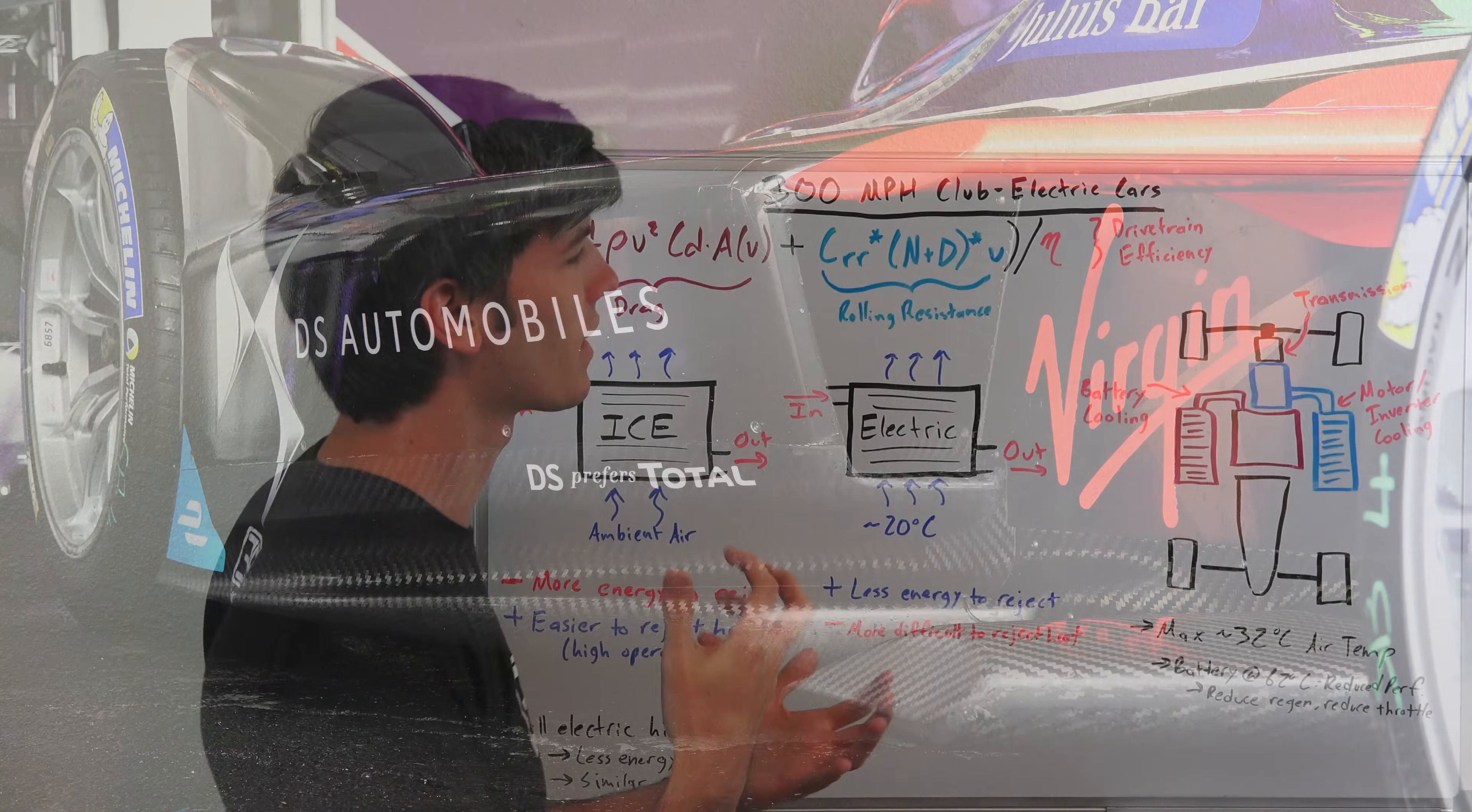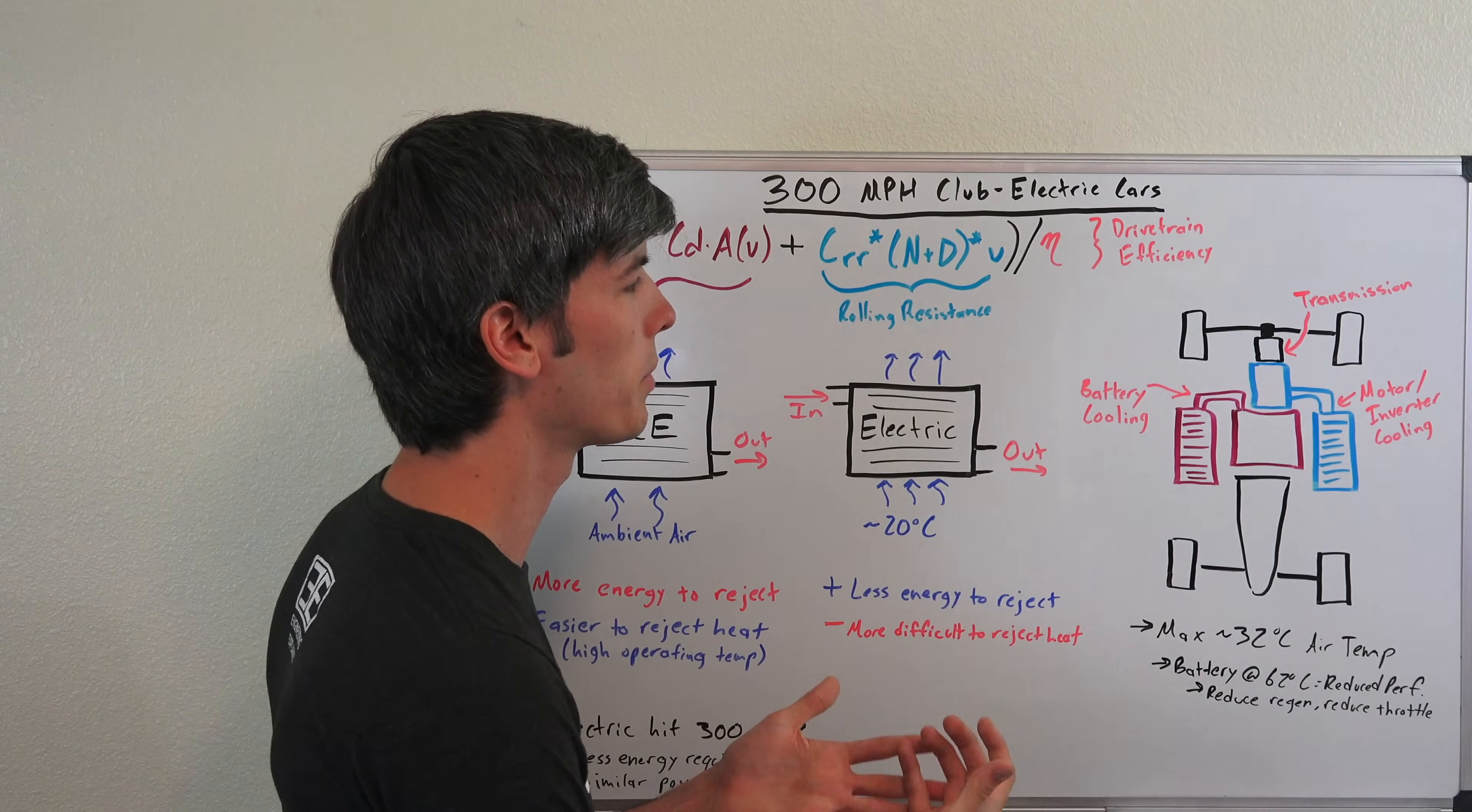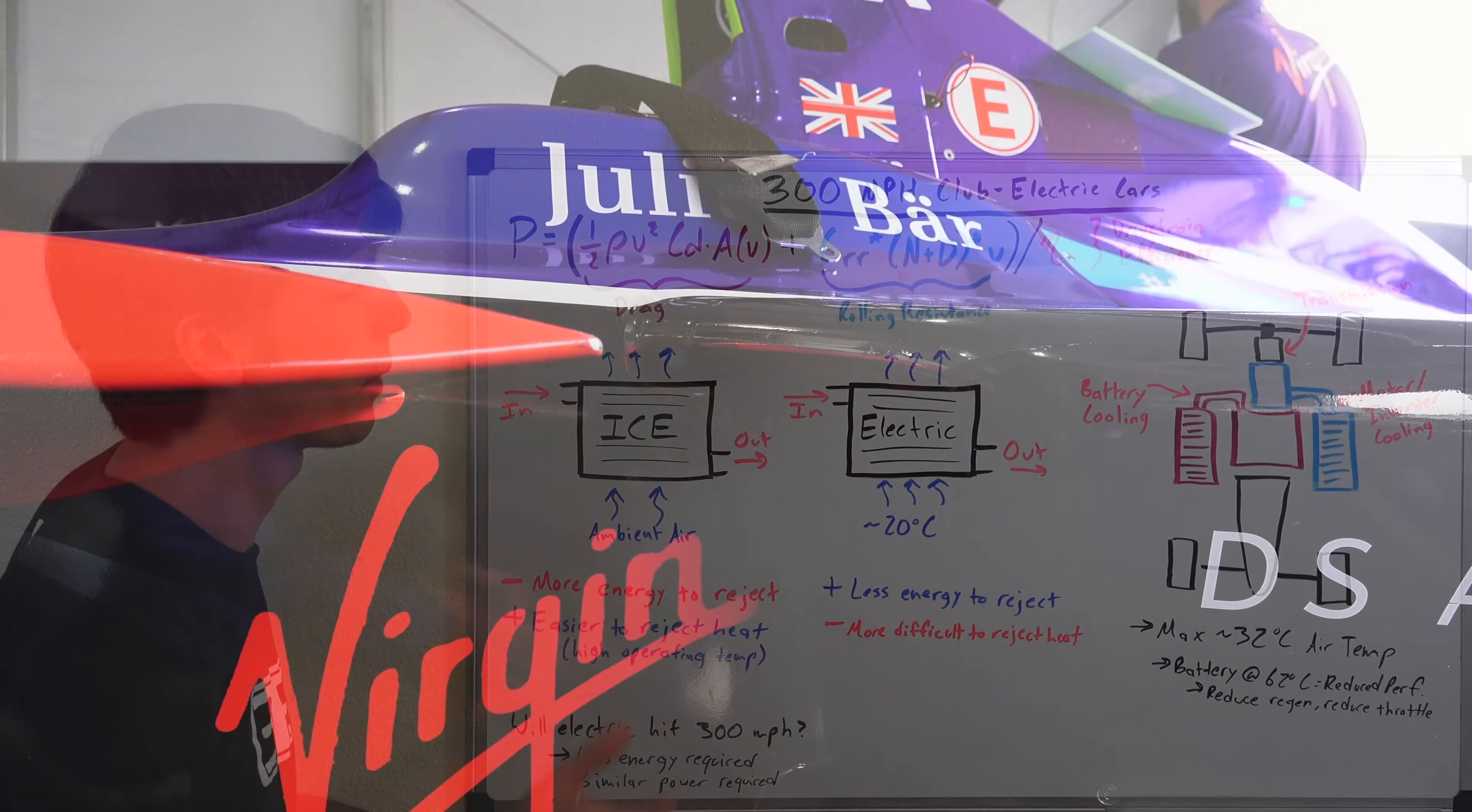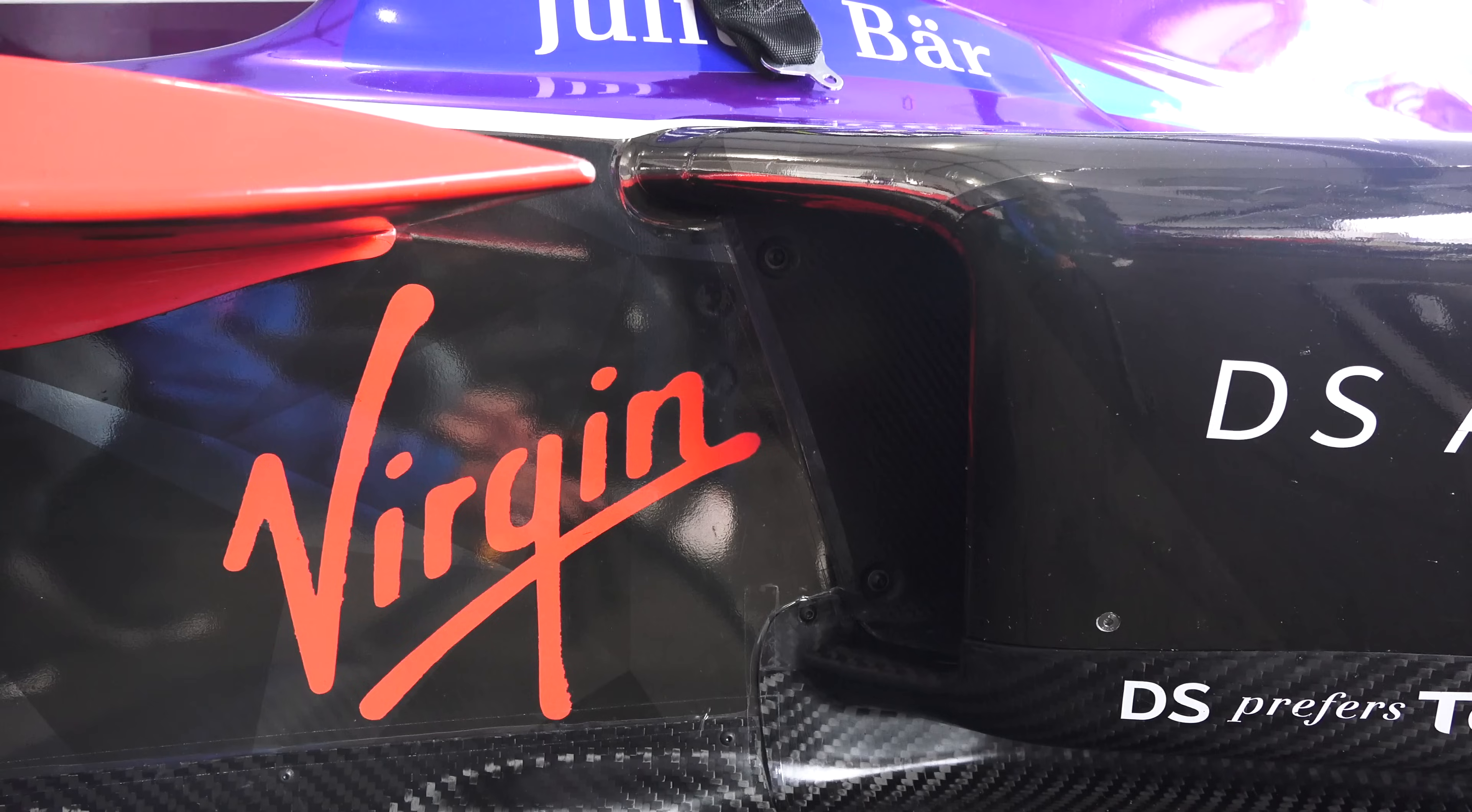And so a lot of people in the comments asked, would it be easier to achieve this 300 mile per hour goal using an electric car because they're far more efficient? And then perhaps they wouldn't have that aerodynamic drag because they wouldn't need as much cooling. So that's what we're going to discuss in this video.